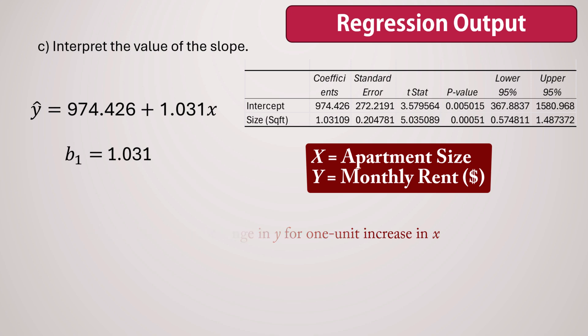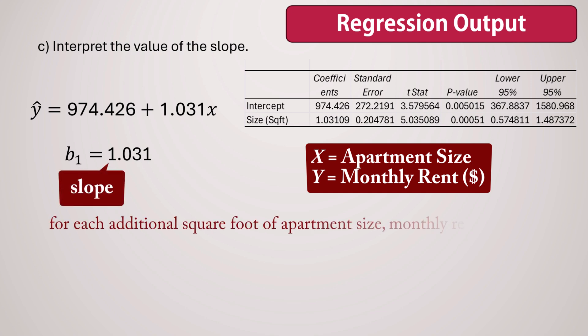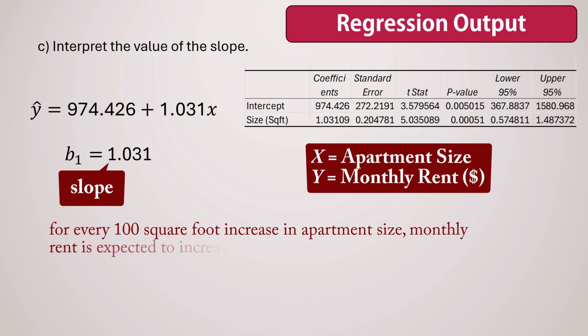In this relationship, the slope indicates that for each additional square foot of apartment size, monthly rent is expected to increase by approximately $1.03 on average. Alternatively, we can say that for every 100 square foot increase in apartment size, monthly rent is expected to increase by about $103 on average.